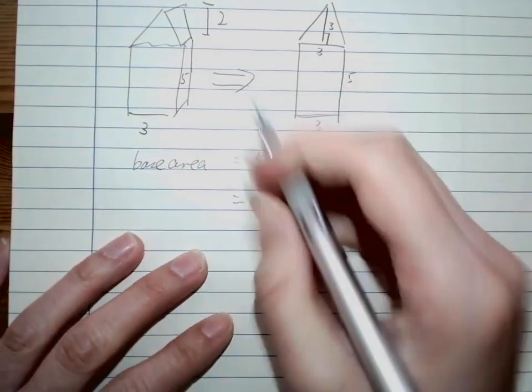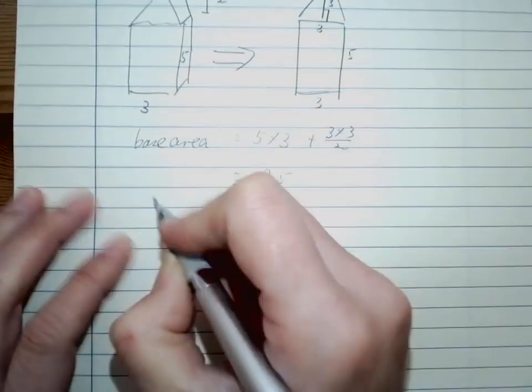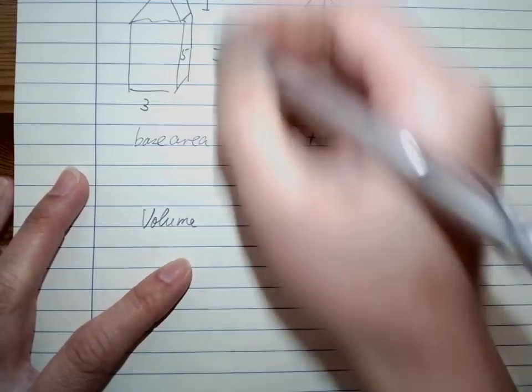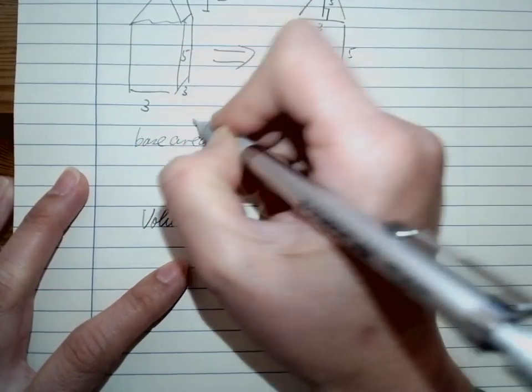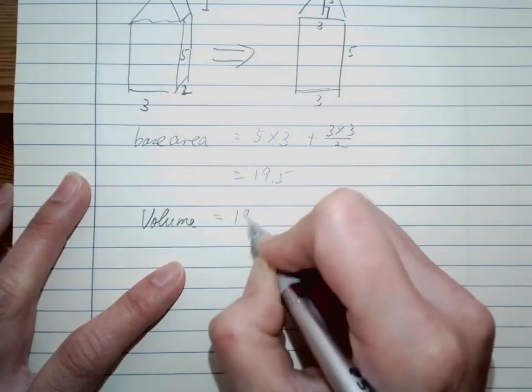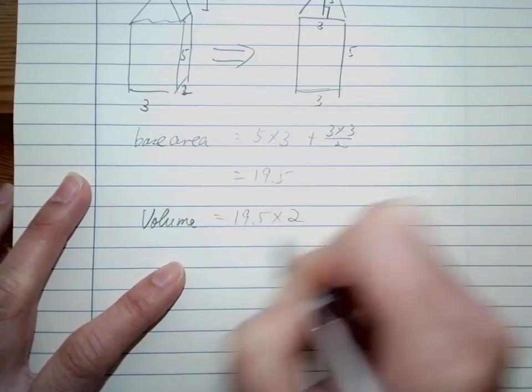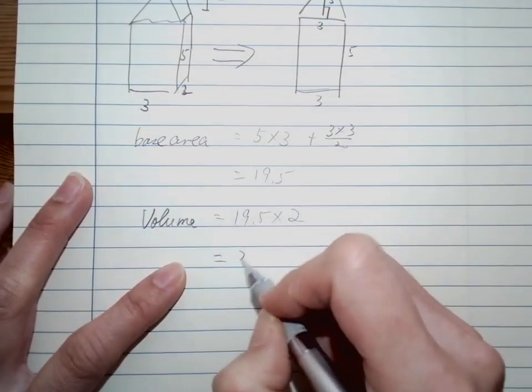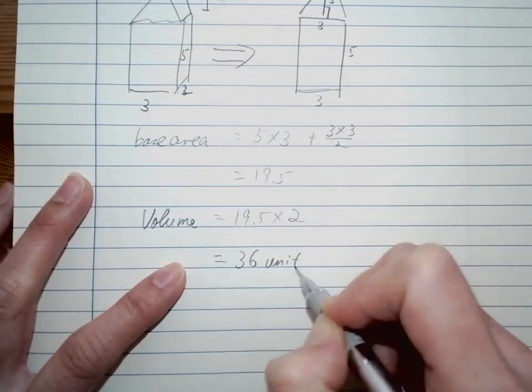The thickness, so I have 19.5 times two, so I have 39 unit cube.